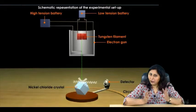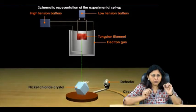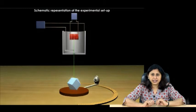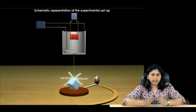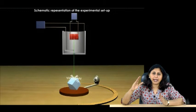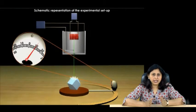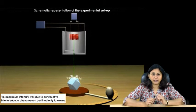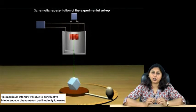Let us find out how they performed the experiment. The electron beam was passed through a pinhole and made to strike the crystal normally. The electrons scattered in all directions, acting like waves. At certain angles, the detector indicated a peak in the intensity of the scattered electron beam. This maximum intensity was due to constructive interference, a phenomenon confined only to waves. Thus, they experimentally proved the wave nature of electrons.